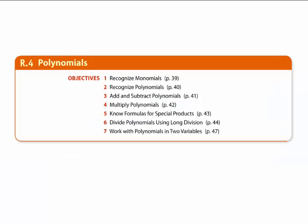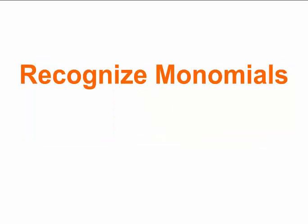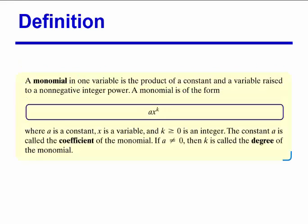In Section 4, these are the objectives we're going to be covering. The first one is we're going to recognize monomials. A monomial in one variable is the product of a constant and a variable raised to a non-negative integer power. So a monomial is in the form ax raised to the k power, where a is a constant, x is a variable, and k is greater than or equal to 0 and is an integer. The constant a is called the coefficient of the monomial. If a does not equal 0, then k is called the degree of the monomial.